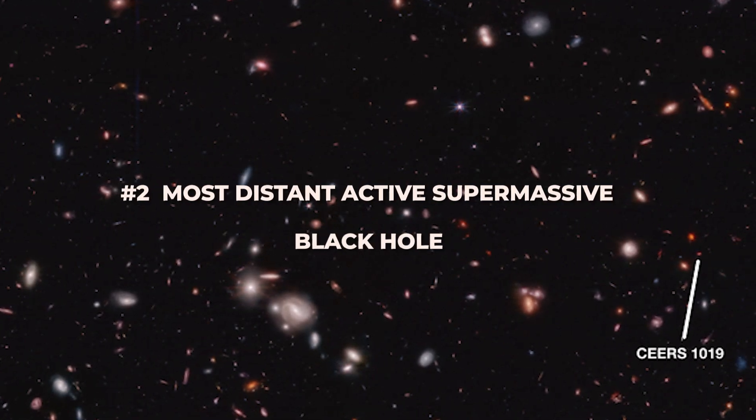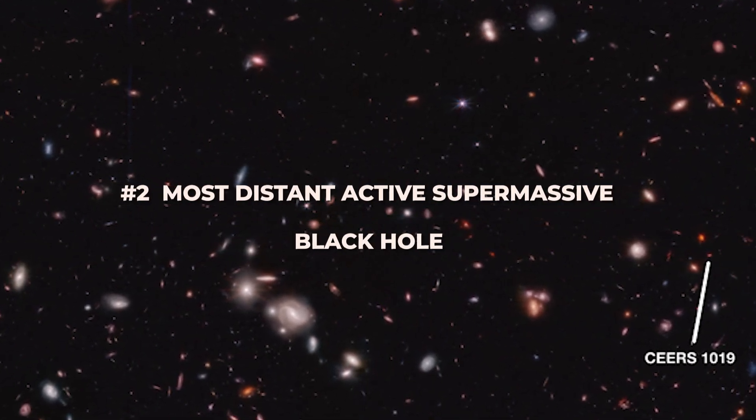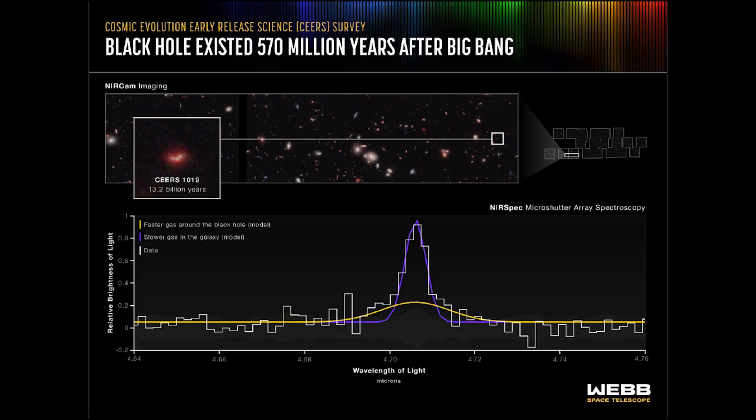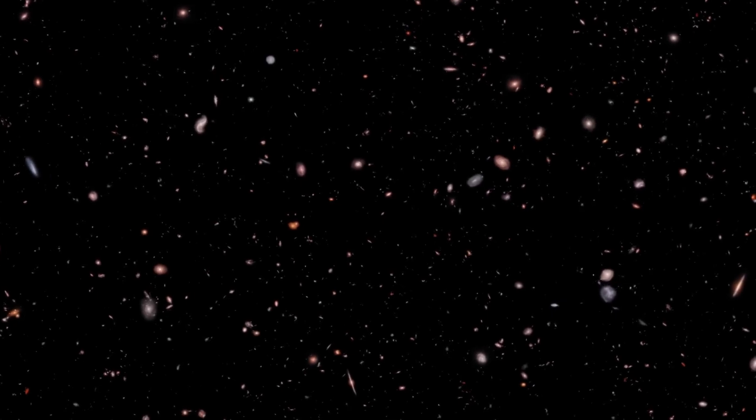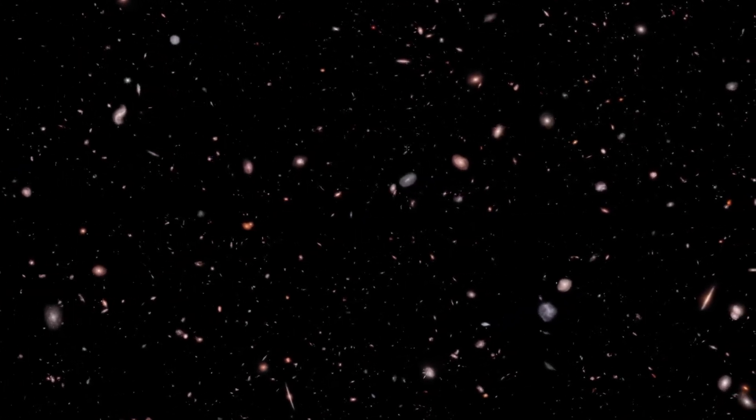Number 2: Most distant active supermassive black hole. Based on images and spectral data from the Webb Telescope, researchers conducting the Cosmic Evolution Early Release Science, or CEERS, survey found the most distant active supermassive black hole ever seen.